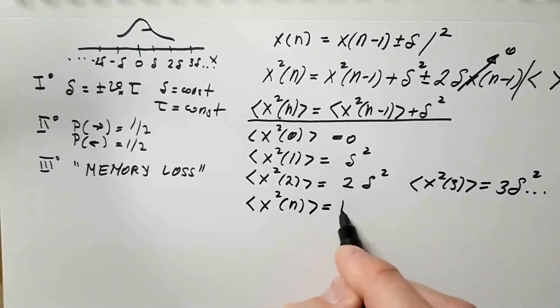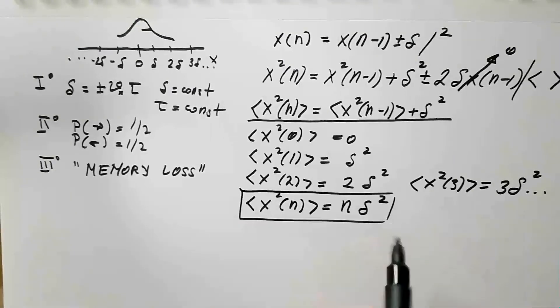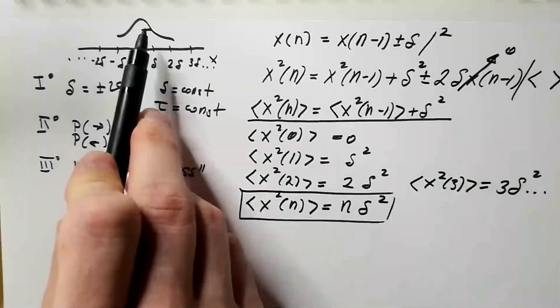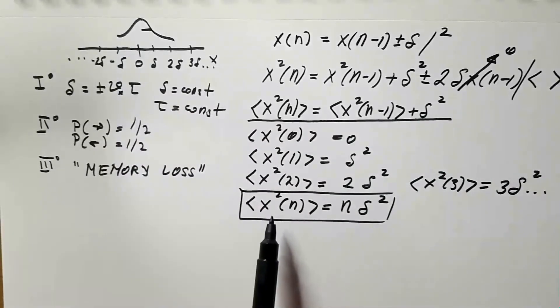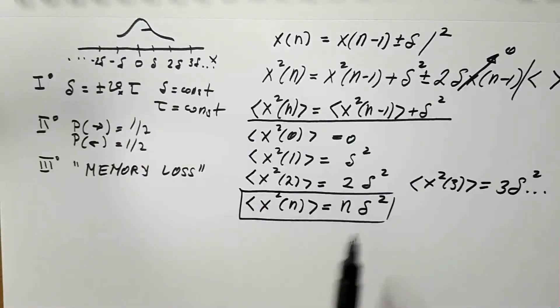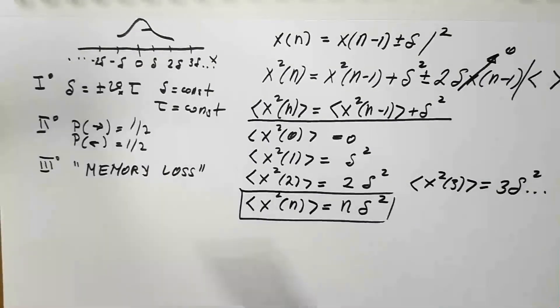And I hope you can see that for example the mean square displacement after 3 steps will simply be 3 delta squared and so on, which means that the mean square displacement after n steps is n times delta squared. And this is the formula that basically gives us the spread of this distribution. It tells us that the mean square displacement is proportional to the number of jumps or steps this particle took.